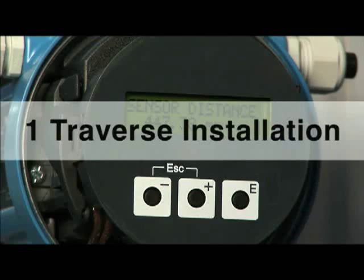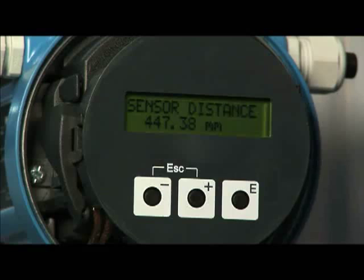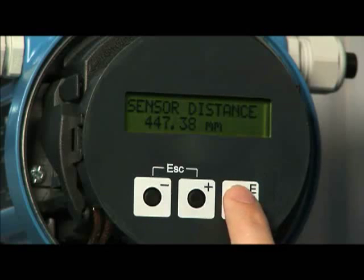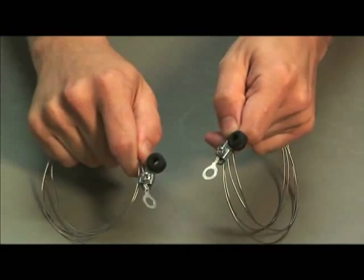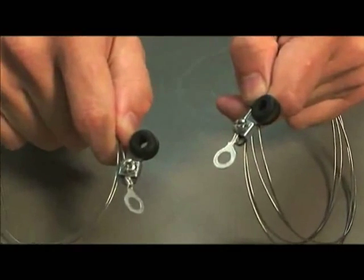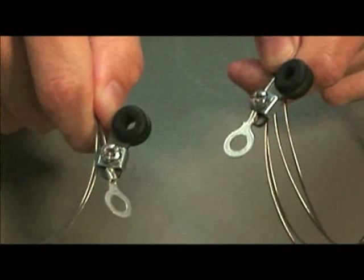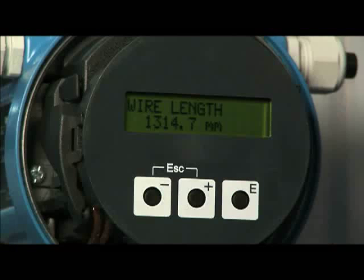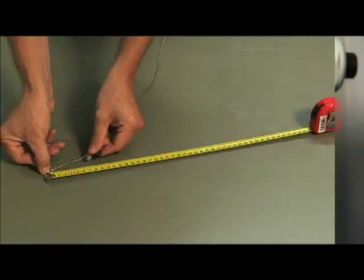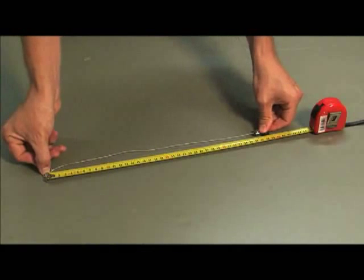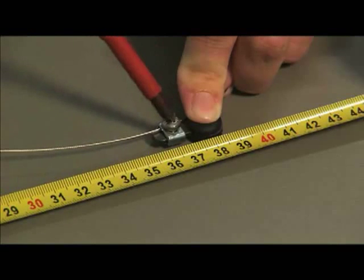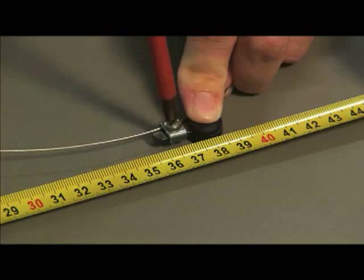For a one traverse installation, the transmitter will display a sensor distance and wire length. The instrument is delivered with two wires with a flat cable shoe on one end and a variable length cable shoe on the other end. Adjust the cable shoes to correspond with the wire length indicated from the transmitter. The distance should be measured from the center of each cable shoe. Securely tighten the screw on the variable cable shoe so that the cable shoes are firmly positioned at the proper distance.